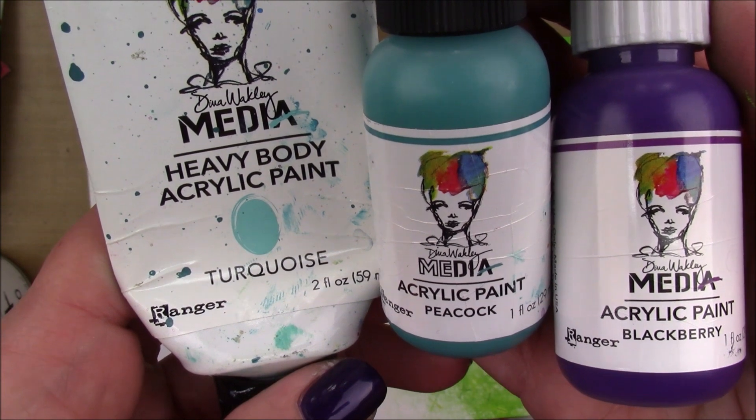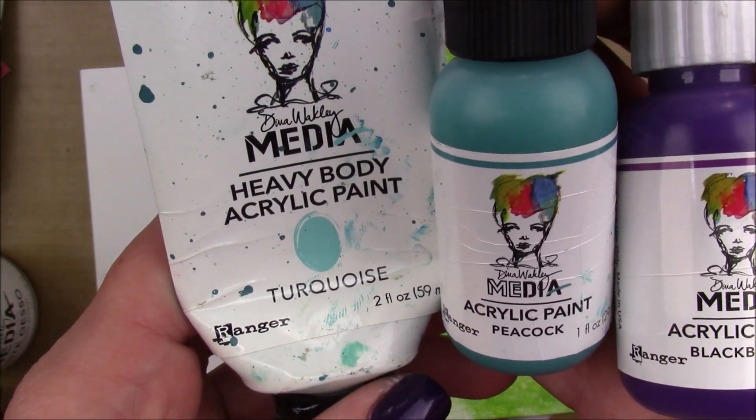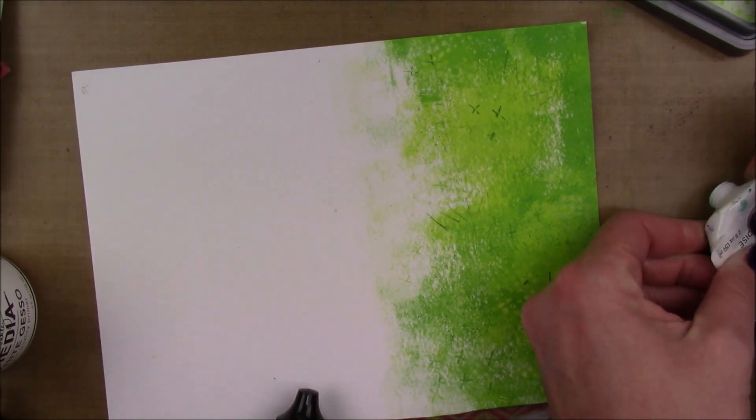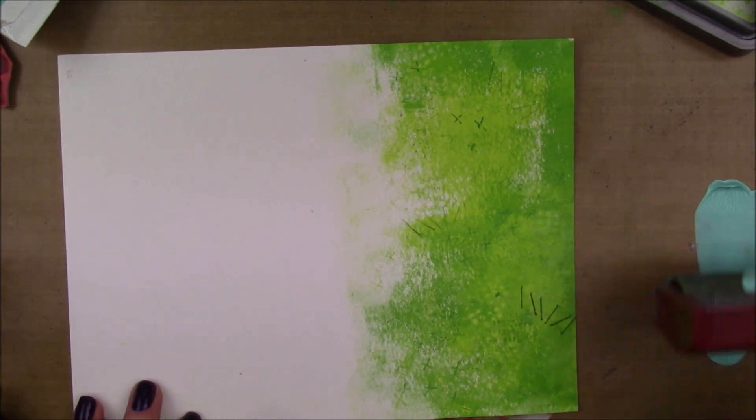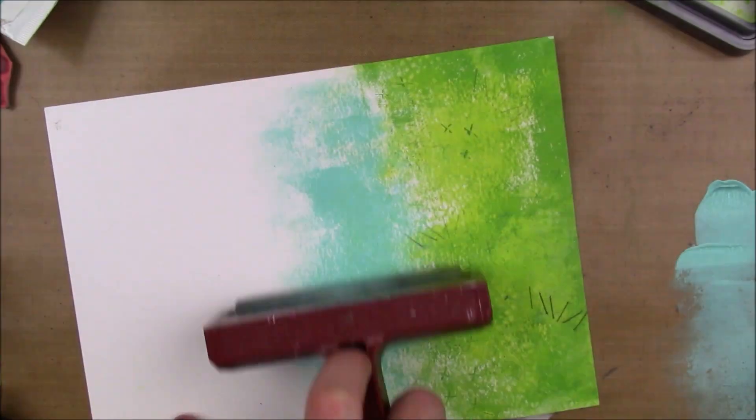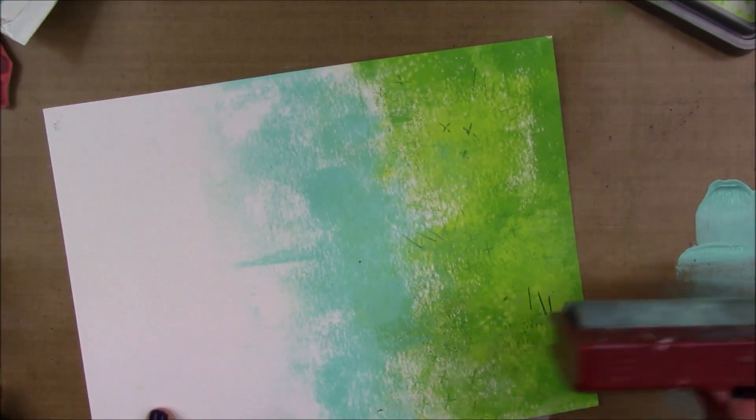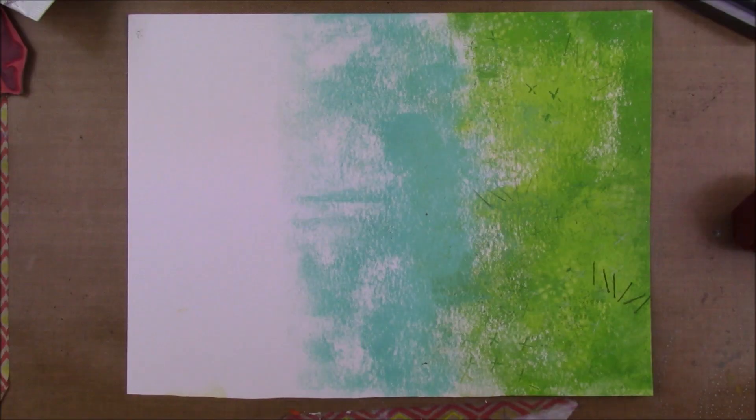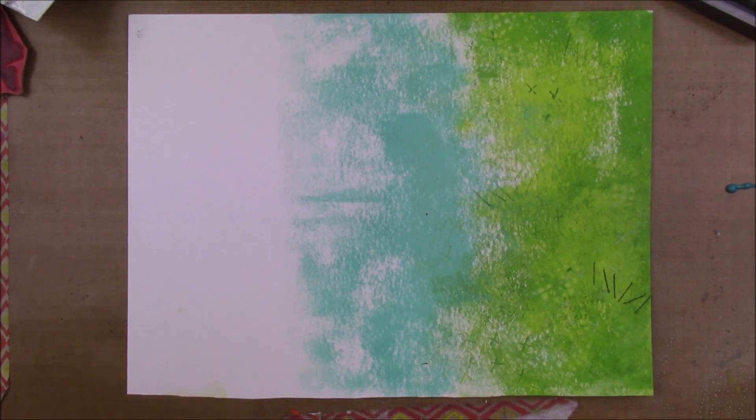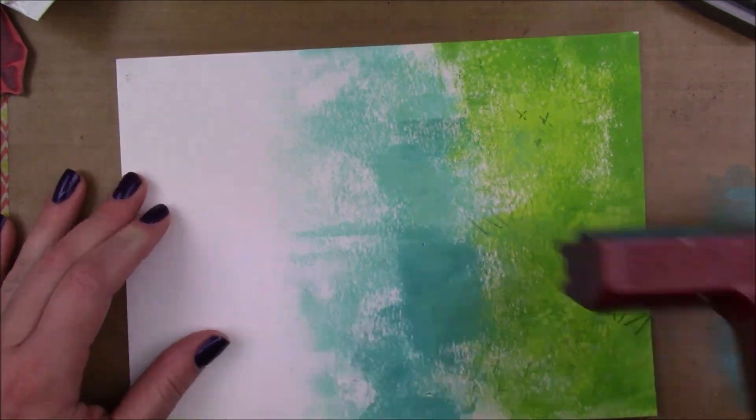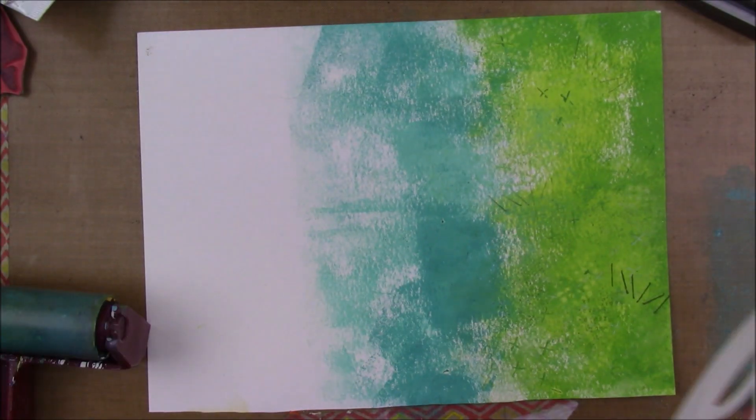Then I'm going in with a second stripe of color with turquoise, peacock, and blackberry Dina Wakeley media acrylics. I'm gonna do the same, apply that with my brayer. My idea was, because I knew I was gonna do artist trading coins and they're about 2.5 inches in diameter, so I was trying to do these stripes of color so that I could die cut circles out. But I wanted, I didn't want all the coins to be in the same color.